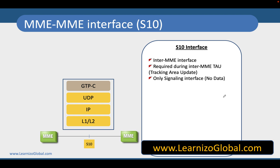Let's talk about another interesting interface called the S10 interface. S10 is the interface between two different MMEs. Whenever a user moves from one MME to another MME — whether because of idle mode mobility or dedicated mode mobility — the MMEs have to communicate with each other.